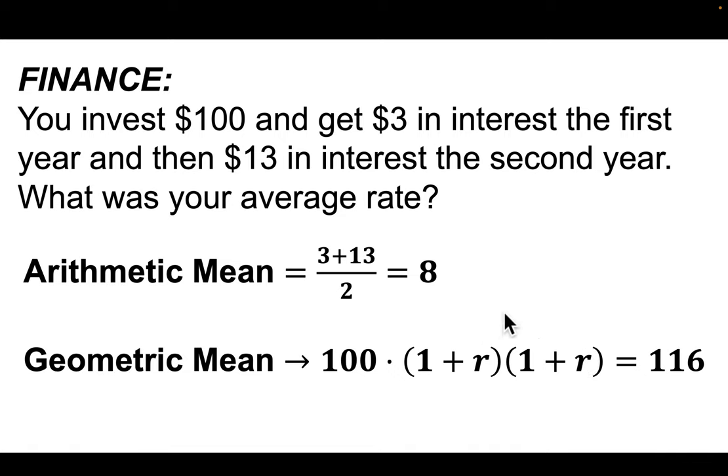Now, truthfully, interest rates will fluctuate from year to year. But here, if we're trying to find the average return in terms of an interest rate, we assume one R value. And what this is saying is, if you start at 100, what interest rate would you need to compound it twice so that you get 116?